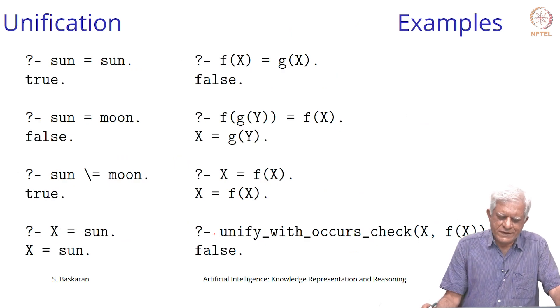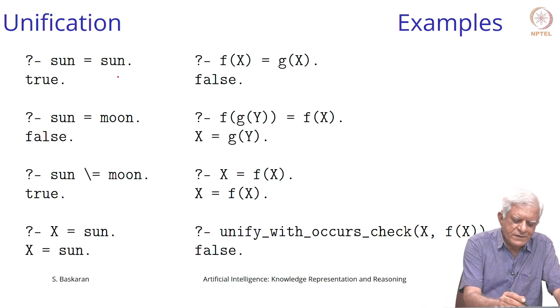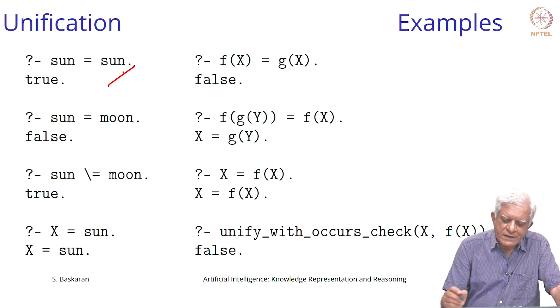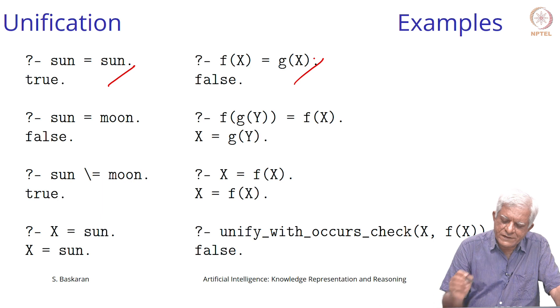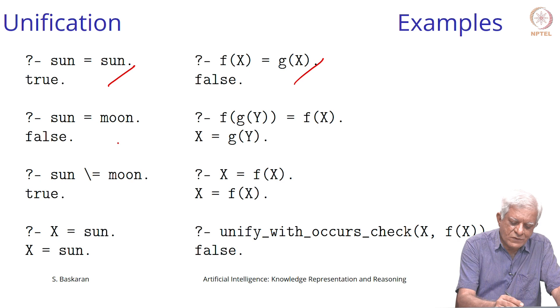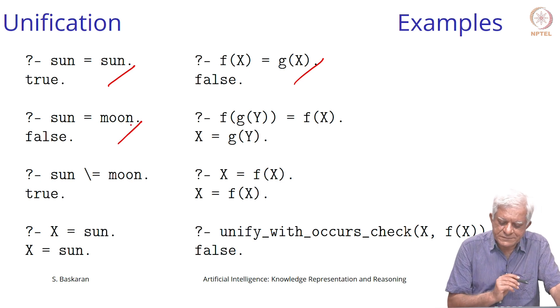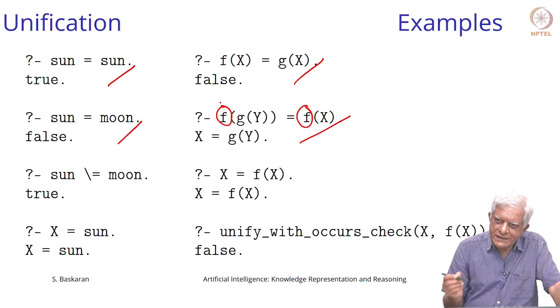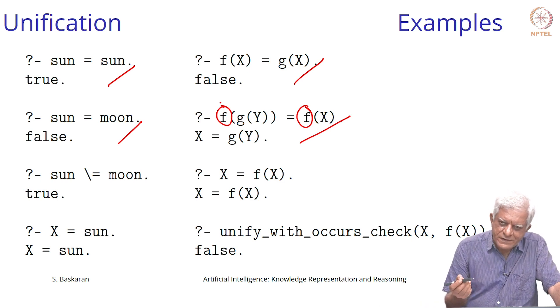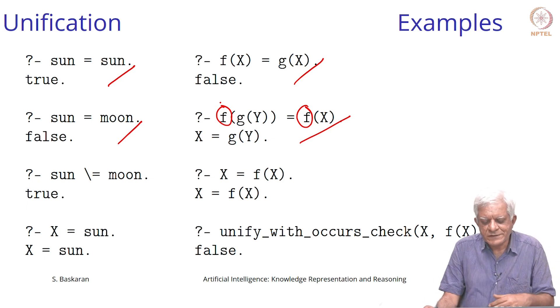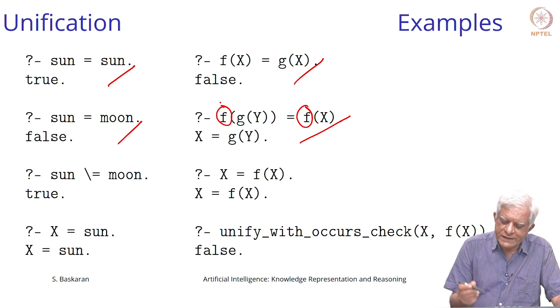We are talking about unifying terms. If you have two constants sun equal to sun, it will return true. If there are two functions with a different function name f and g, it will return false. If there are two different constants, it will return false. If there are two functions whose names match, then if their arguments can be unified, it will say yes.